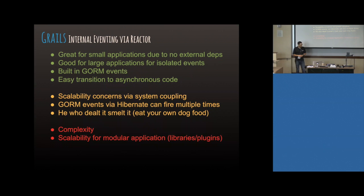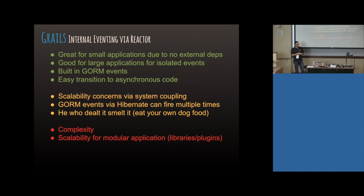There are scalability concerns via coupling. If you have a distributed system like our production environment with eight web servers, and one server happens to be taking a bunch of requests, firing events, and also having to respond to those events, it can get overburdened. You're not saying 'here's an event and anybody can do it' — you're saying 'I've got to do this thing now.' It's in a different thread and it's asynchronous, but at scale it could cause the system to become a little bit unstable.